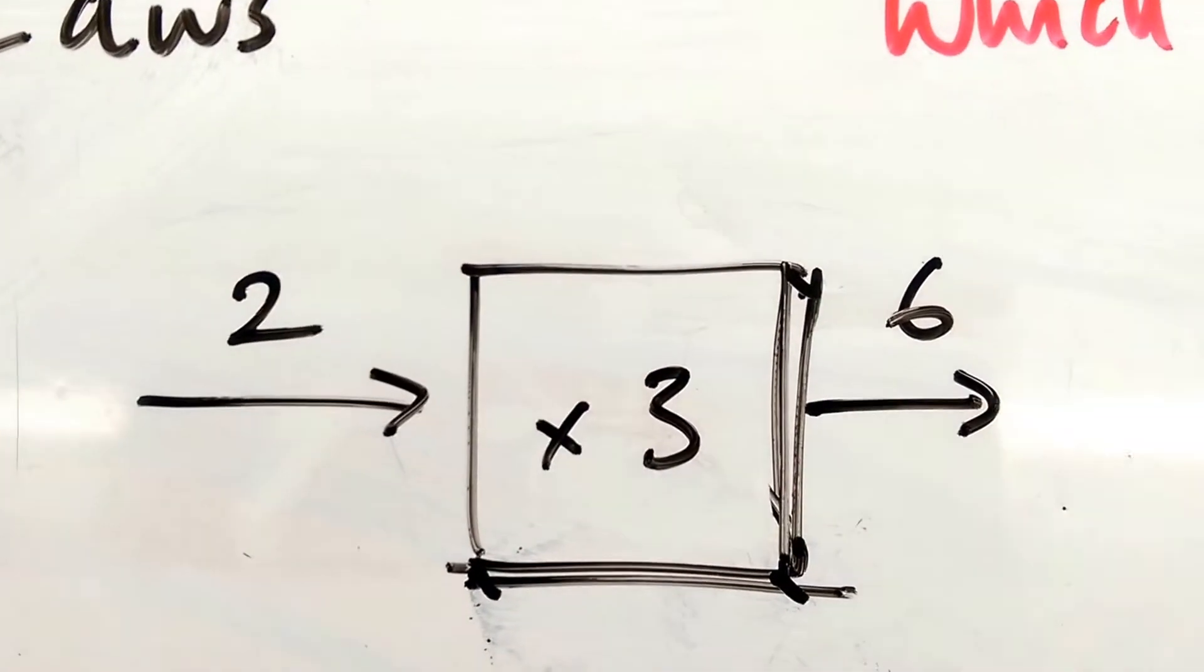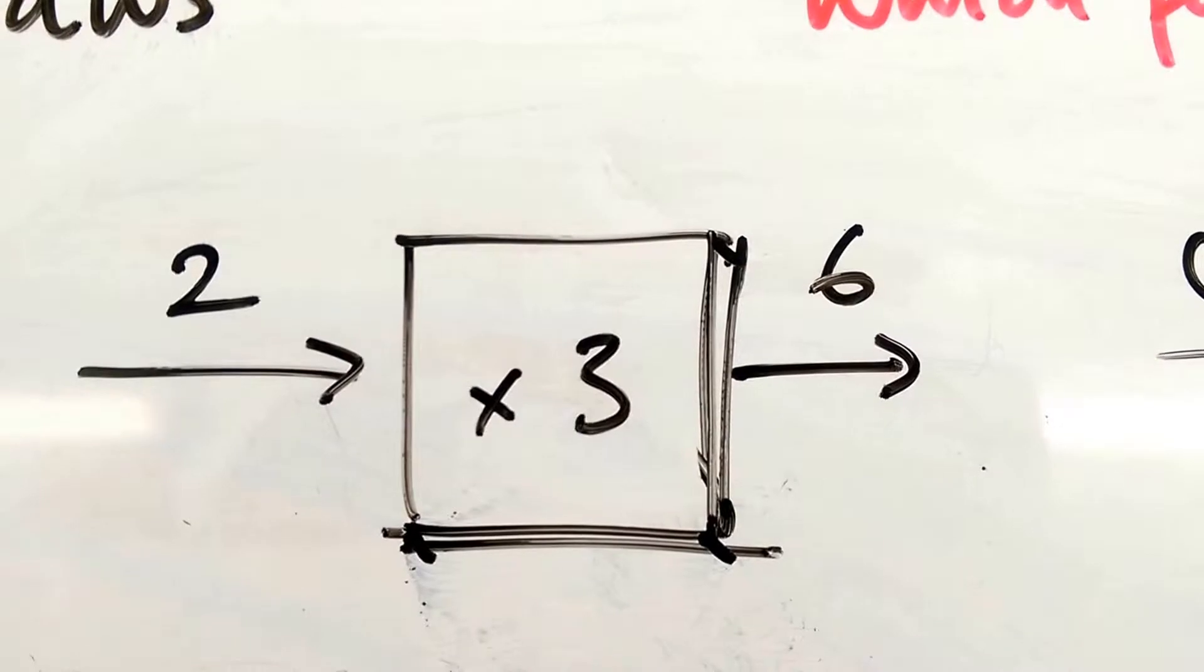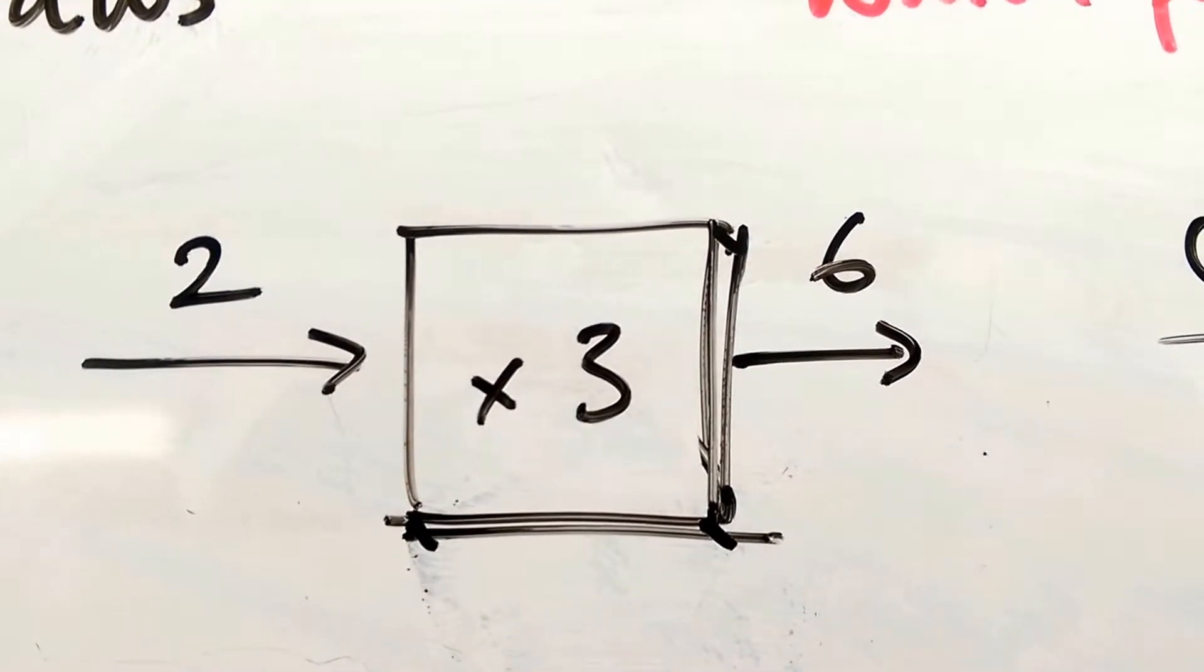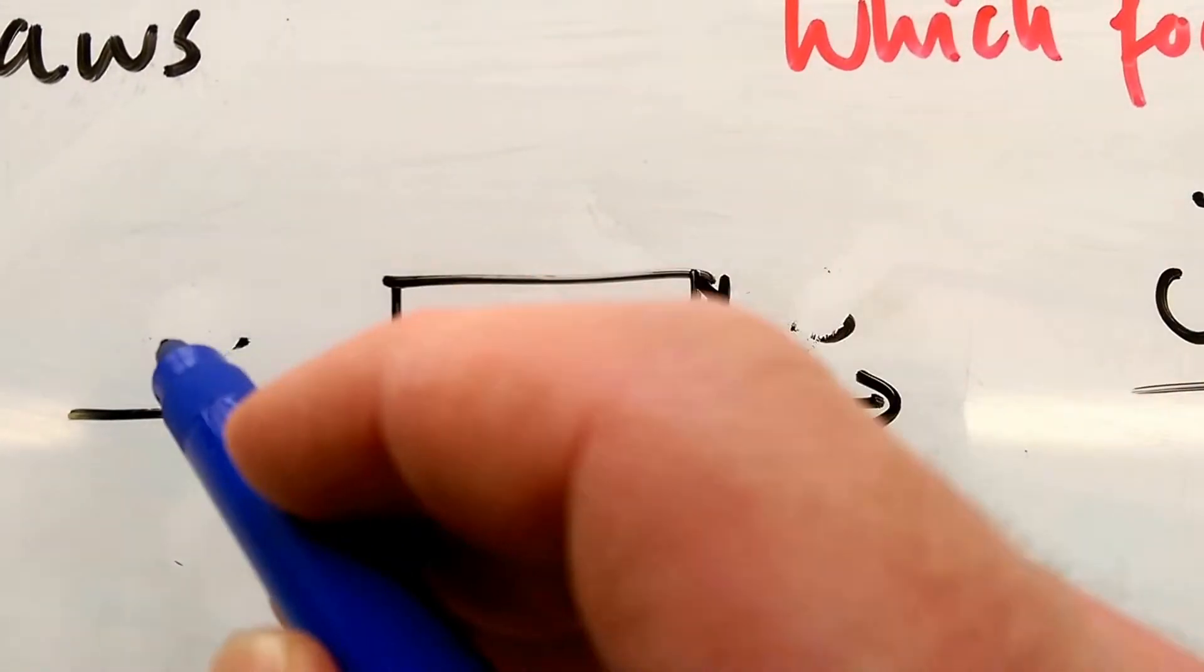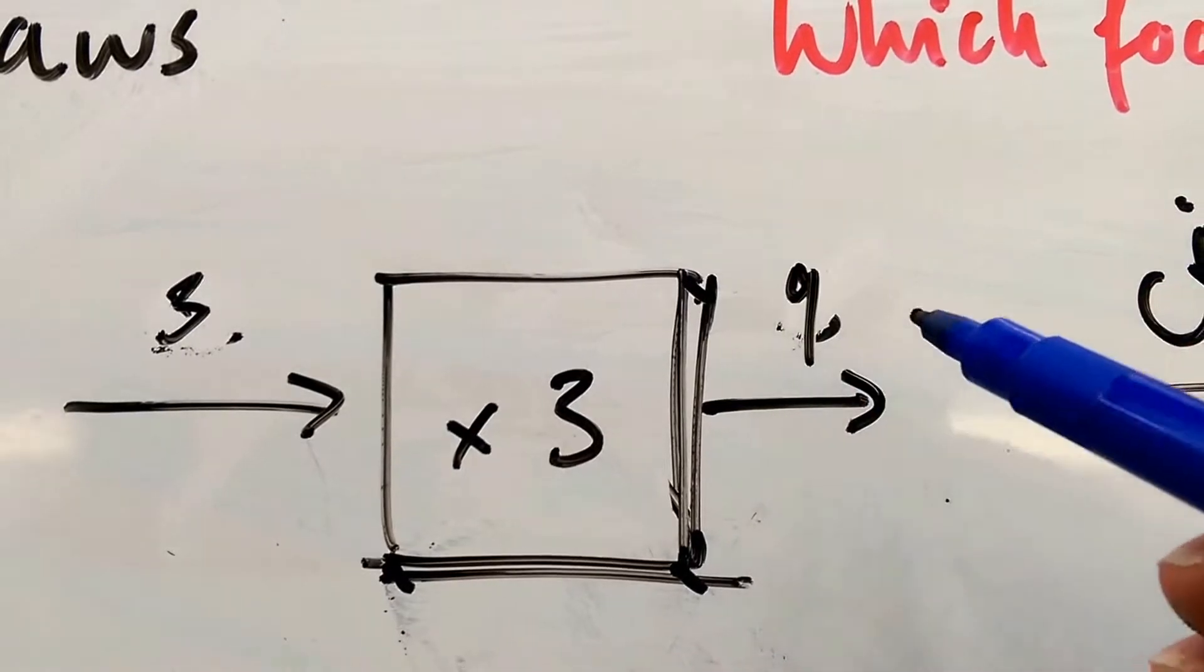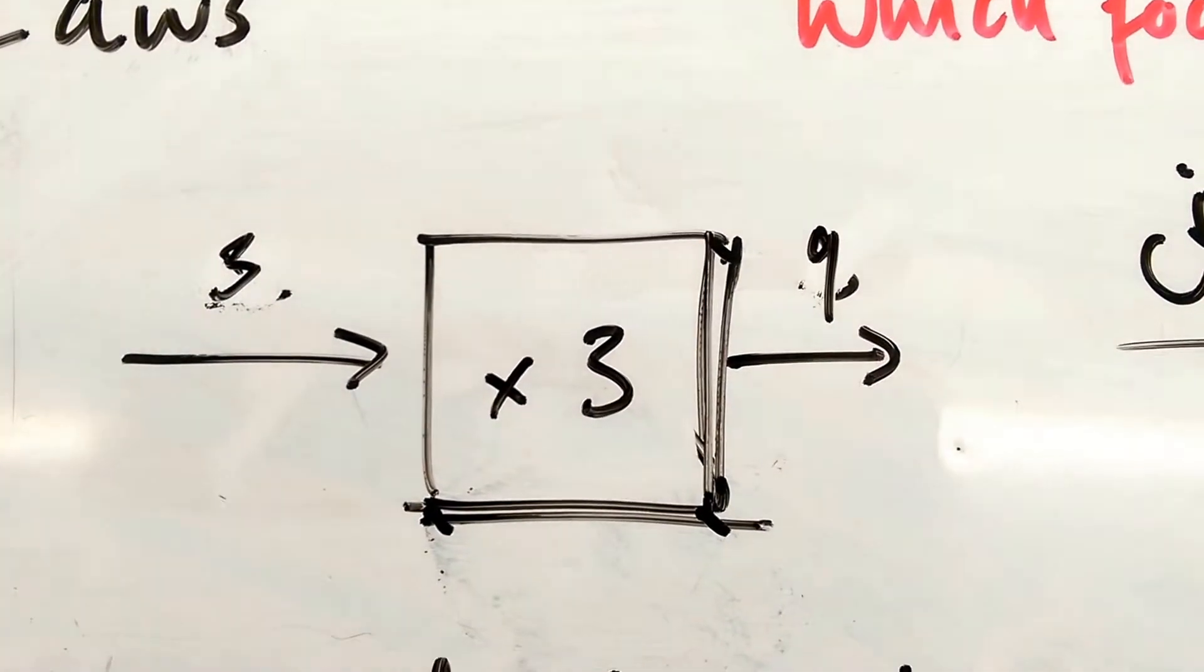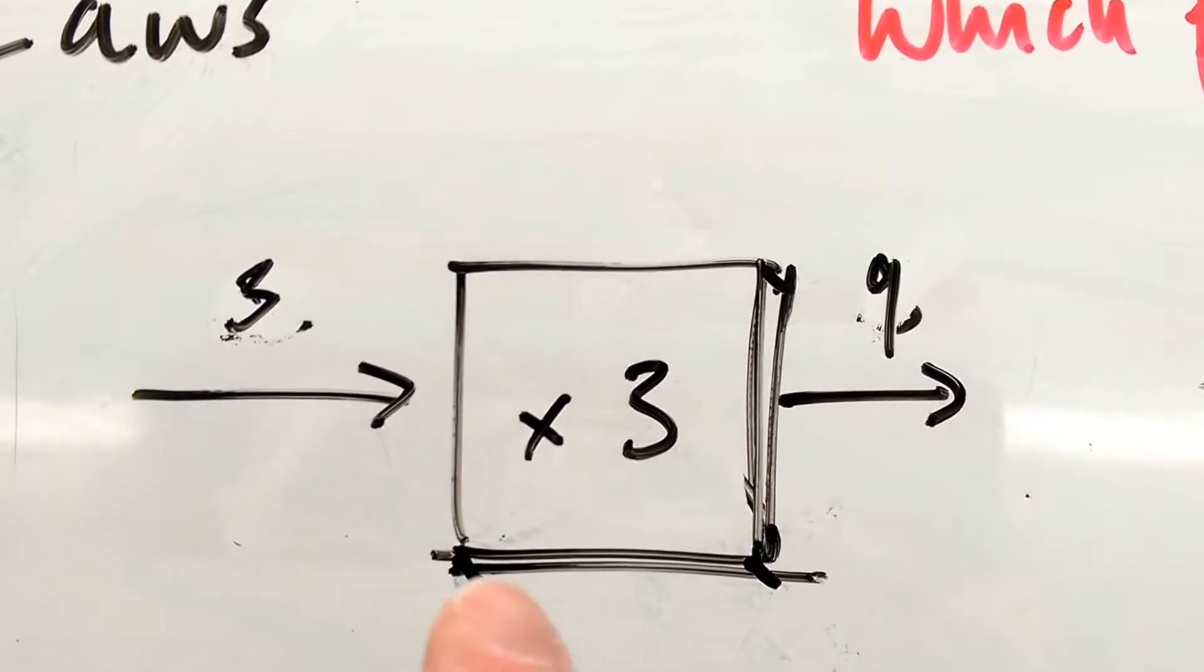An experiment is a bit like a function machine in maths. If you put a 2 into this function machine, the function machine always times it by 3, and so you get 6 out. If I put 3 in, that's going to times it by 3, I'm going to get 9 out. The experiment is just like that. What we put in determines what we get out, and the experiment always does the same thing.